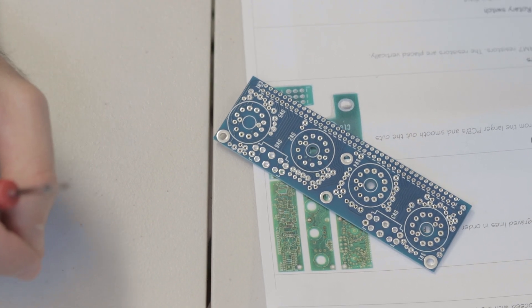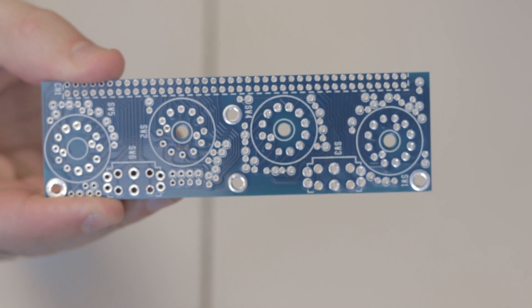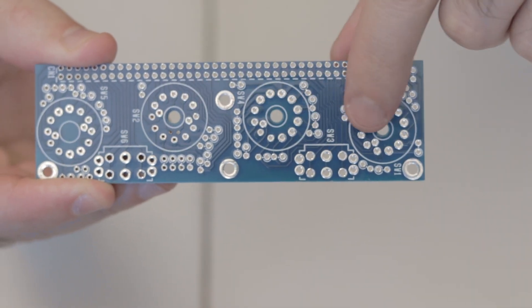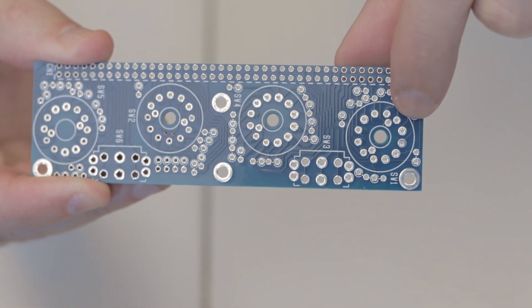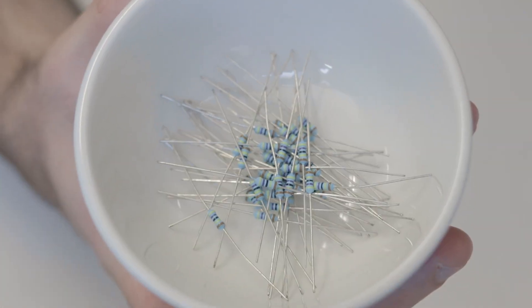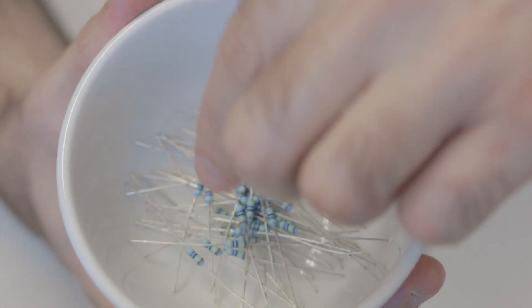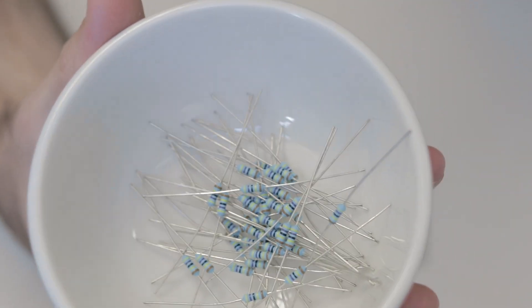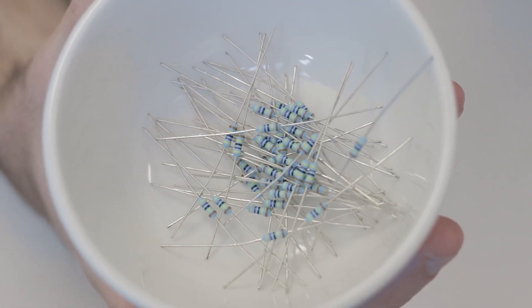Welcome back to the channel guys. Today in this video, we're going to be starting with the daughter boards that are used for the rotary switches. This board in particular is for the frequency select. And the first thing you're going to need to do is insert and solder 43 of the same exact type of resistors. They come joined all together, so it's nice and easy to find them.